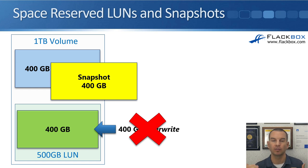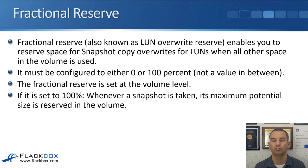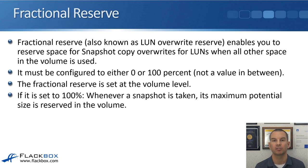So first writes to the LUN are always successful, but overwrites can still fail. The fix for this is the fractional reserve setting, also known as LUN overwrite reserve, which enables you to reserve space for snapshot copy overwrites for LUNs when all other space in the volume is used.